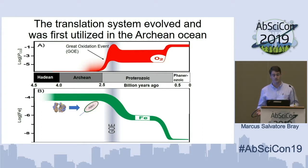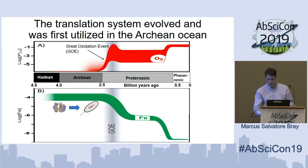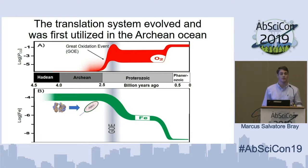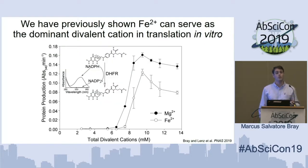Not only did the ribosome evolve in this environment, it was then encapsulated by cells and used in early life forms for at least an additional 1 to 2 billion years before oxygen started to rise during what's known as the Great Oxidation Event and precipitate out this iron. Divalent metal cations are absolutely essential to the structure and function of the ribosome and the whole translation system. Historically, magnesium has been implicated as the sole divalent cation in this process. However, we've recently shown that iron can near totally replace magnesium in the entire translation system and mediate the translation of functional protein.